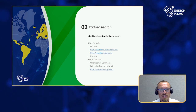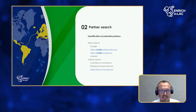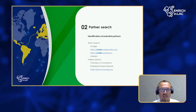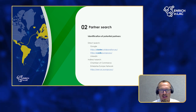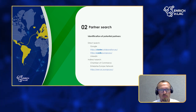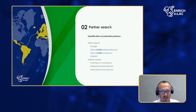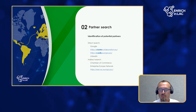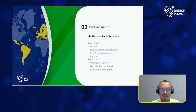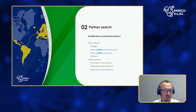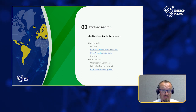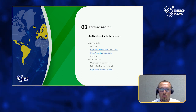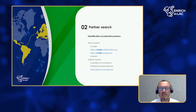Another source is Cordis — the database of the European Union for all funded projects. There are a lot of projects there and I think the first framework program was launched in 1987. Have a look, because those companies are innovative. LinkedIn is also a good source: you can look for persons working in a specific branch and with a specific job title.